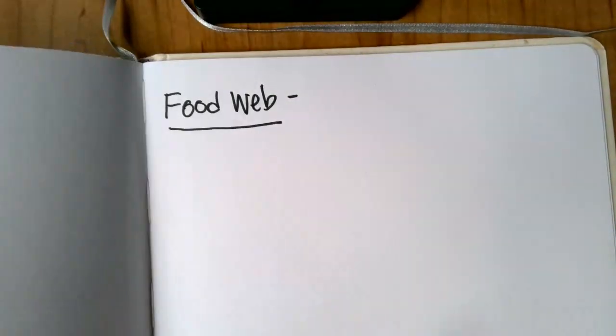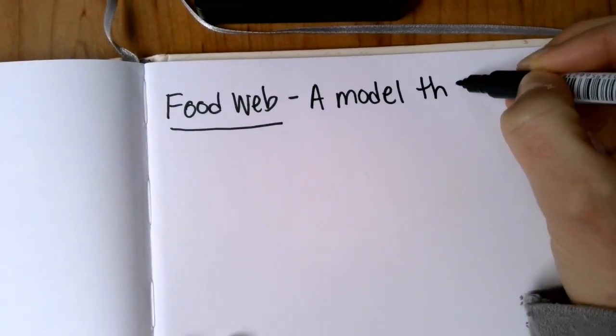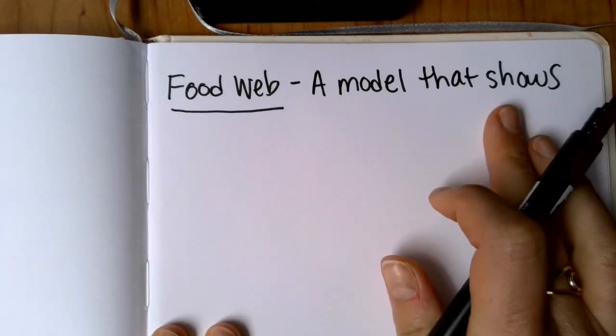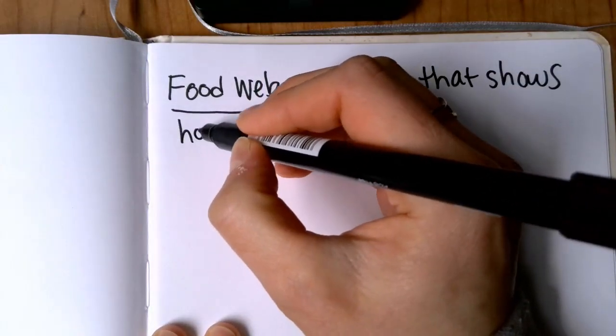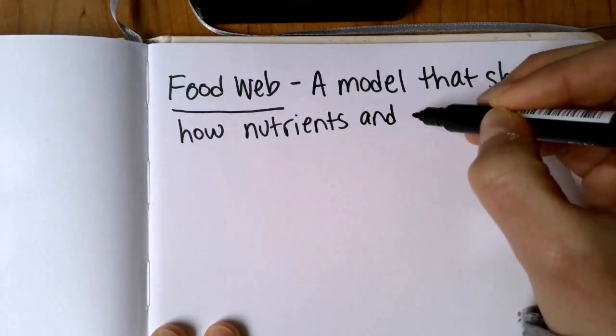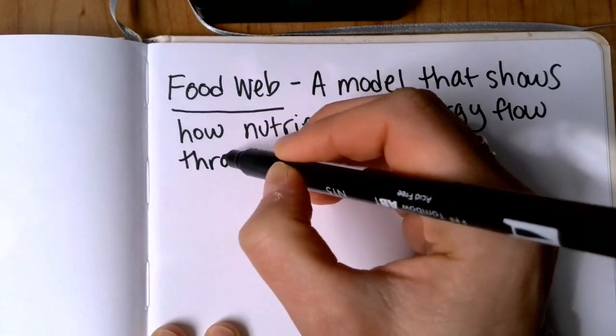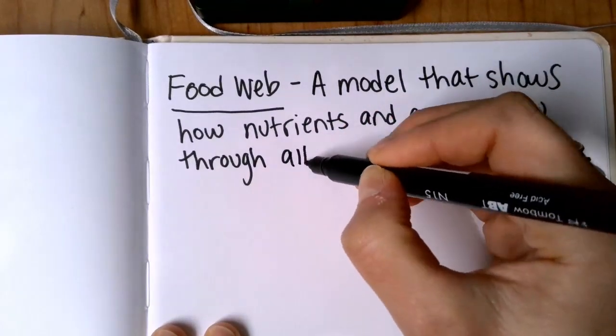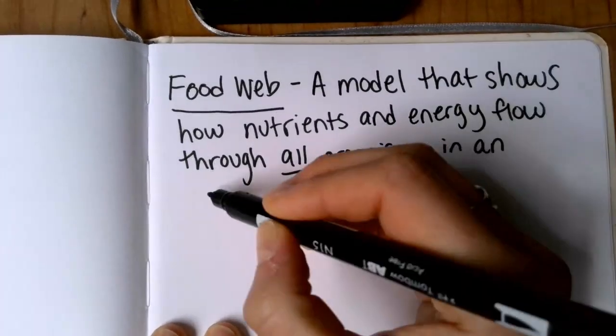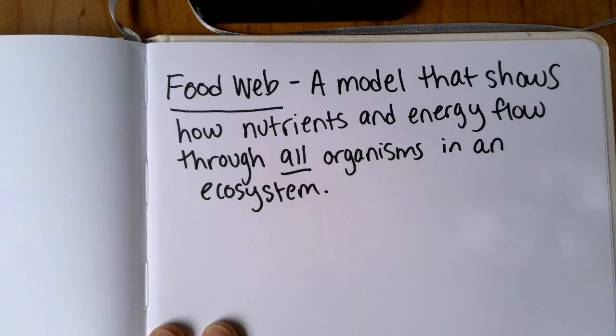We're going to write down that a food web is a model that shows—so again, we've used a model all year, we know what models are—a model that shows how nutrients and energy flow through all organisms in an ecosystem. I'm going to pause there while you catch up and make sure you have that written down.